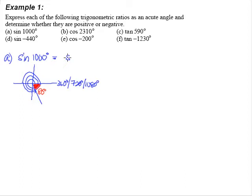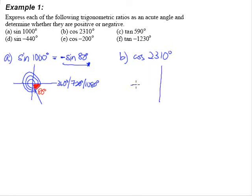Now let's move to part B. We're now supposed to work with cosine 2,310 degrees. We need to figure out just exactly where this angle is. We know one round is 360, two rounds is 720, three rounds is 1,080 degrees.